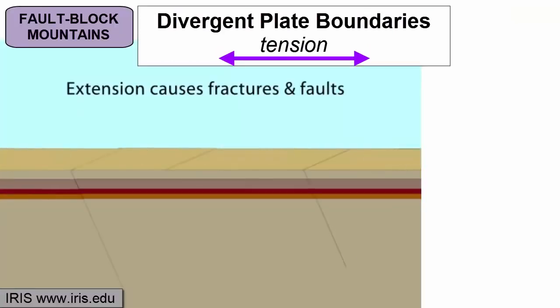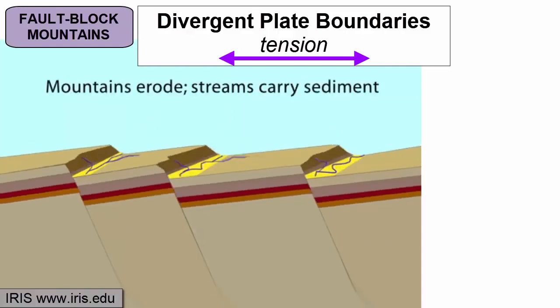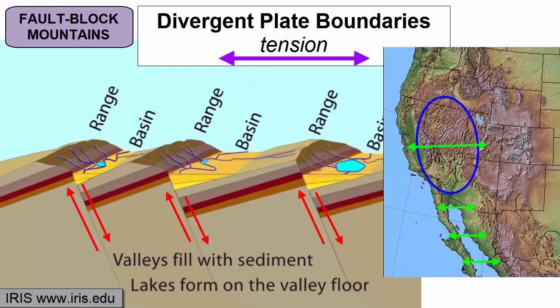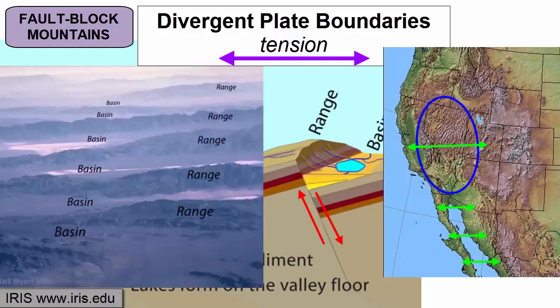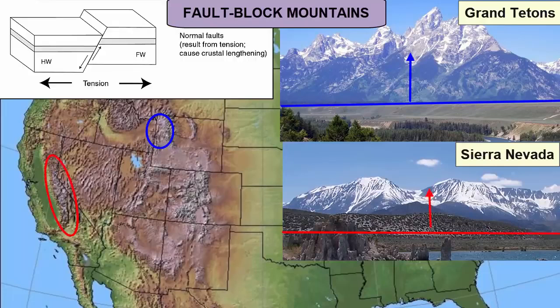Tensional faults are called normal faults. Where tension is pulling apart the American Southwest as a continuation of the divergence in the Gulf of California, we see spectacular examples of the alternating valleys and ridges, or basins and ranges, produced through tension. Both the Grand Tetons' eastern edge and the Sierra Nevada's eastern edge are normal faults along which these mountains rise upward out of the earth.